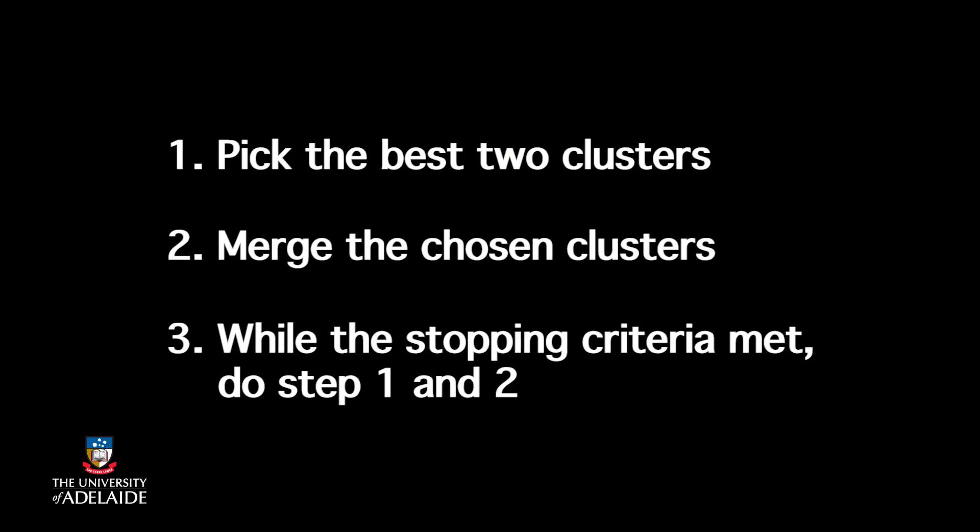The hierarchical clustering algorithm repeats two steps until it reaches the defined stopping criteria. The first step is to pick the best two clusters to combine. The second step is to combine the chosen clusters into one cluster. Then we check if the stopping criteria is met. If not, we repeat the process. If it is met, then we have finished the clustering.